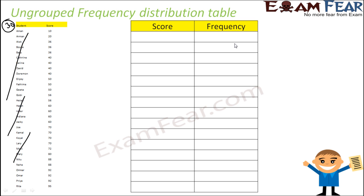We can use score and frequency instead. For example, score 10 is only once, so frequency is 1. Score 20 is twice, so frequency is 2. Score 36 is 3 times, so frequency is 3. The number of occurrences is called frequency.